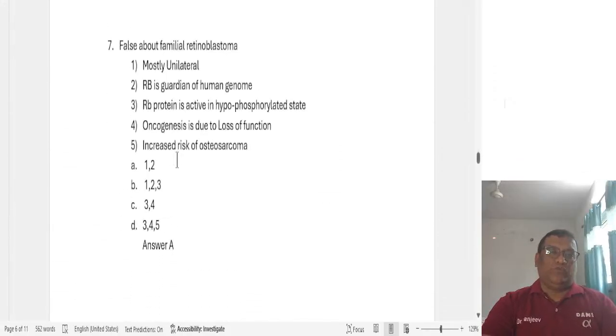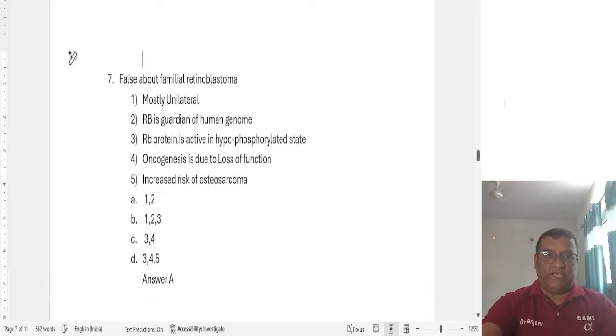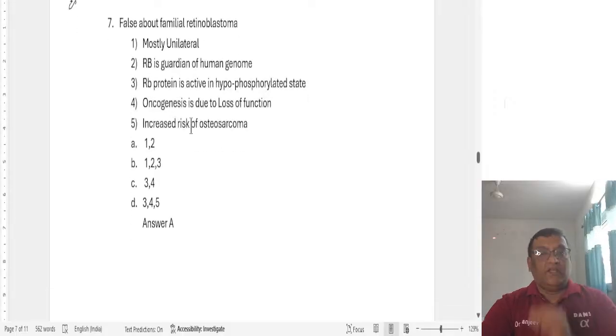False about familial retinoblastoma was there. Some people have recollected in different ways. Let me anyway sort out those questions. Mostly unilateral. Familial will not be unilateral. We discussed according to Knudson's two-hit hypothesis, it should be bilateral. RB is a guardian of human genome? No. Guardian of human genome is P53. RB is called as governor of the cell proliferation. RB protein is active in hypophosphorylated state. So which is false? One is false. Two is also false. RB protein is active in hypophosphorylated state. This was a confusing option now. So is this false or a true statement? So just look what was given. RB protein is active in hypophosphorylated state. True or false?